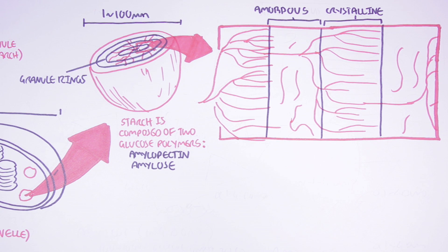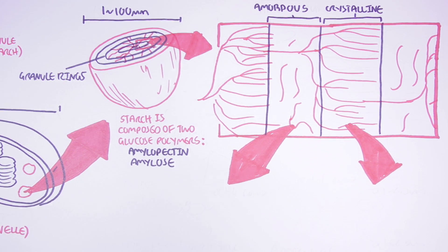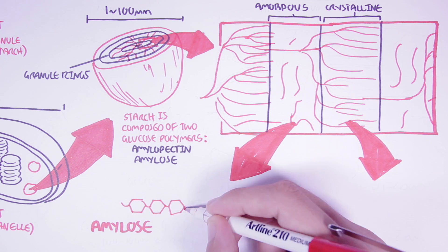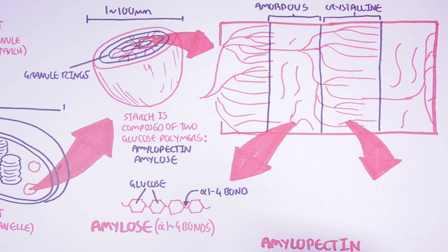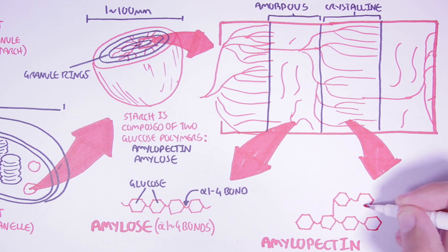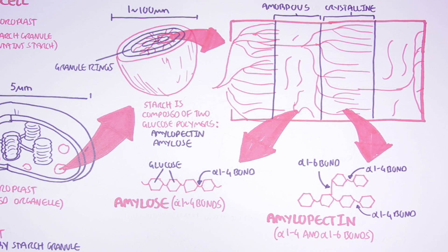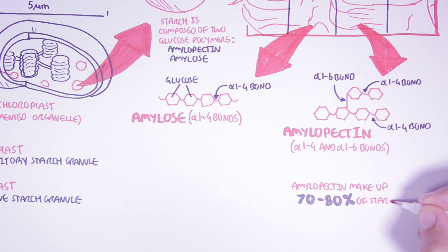These two glucose polymers are known as amylopectin and amylose. The unbranched glucose polymer is amylose — a linear chain of glucose molecules connected by alpha 1 to 4 glycosidic bonds. Amylopectin, on the other hand, is made up of many linear chains of glucose molecules with branch points. The linear glucose are connected by alpha 1 to 4 bonds, and the branch points are connected by alpha 1 to 6 bonds. Interestingly, amylopectin, the branched glucose polymer, makes up 70 to 80% of the starch granule, so typically there is a greater amylopectin to amylose ratio.